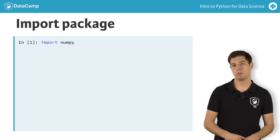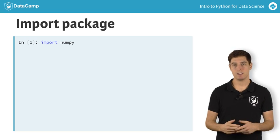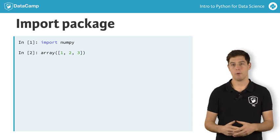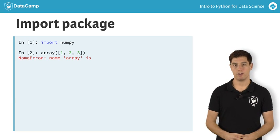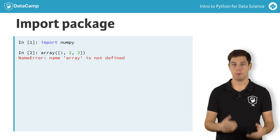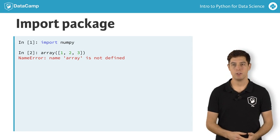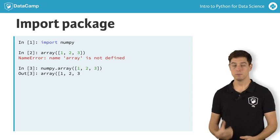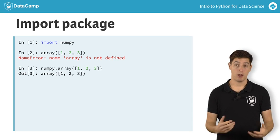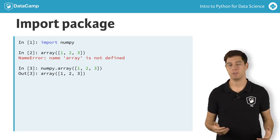A commonly used function in numpy is array. It takes a list as input. Simply calling the array function like this will generate an error. To refer to the array function from the numpy package, you'll need this. This time it works. The numpy array is very useful to do data science, but more on that later.